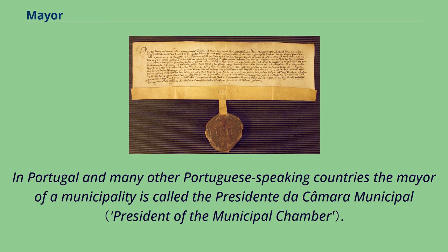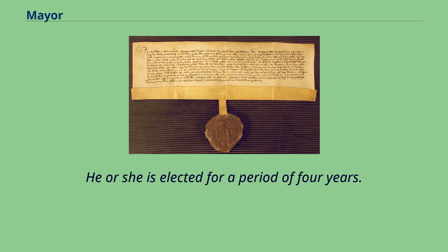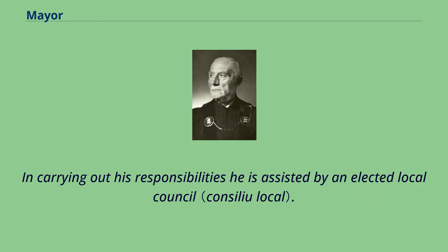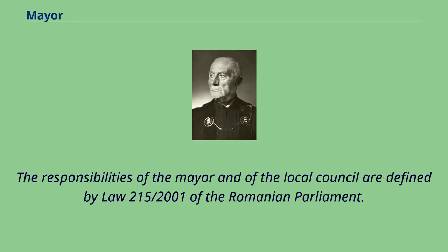In Portugal and many other Portuguese-speaking countries, the mayor of a municipality is called the presidente de câmara municipal. In Romania, the mayor of a commune, town, or city is called primar. He or she is elected for a period of four years and is assisted by an elected local council. Bucharest has a general mayor and six sector mayors, one for each sector. The responsibilities of the mayor and of the local council are defined by Law 215/2001 of the Romanian Parliament.